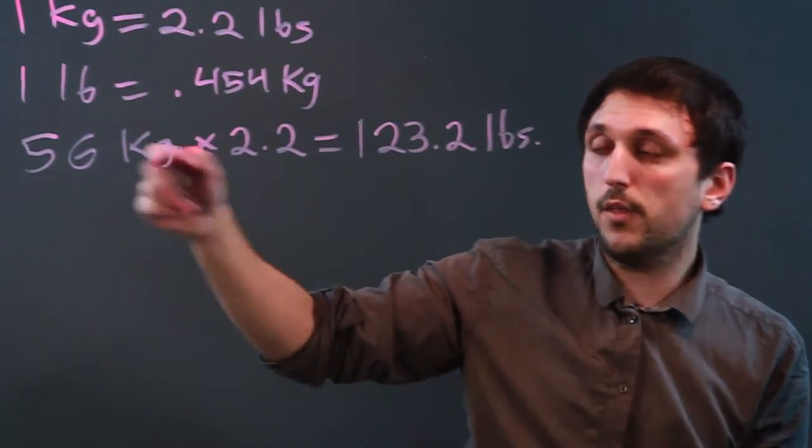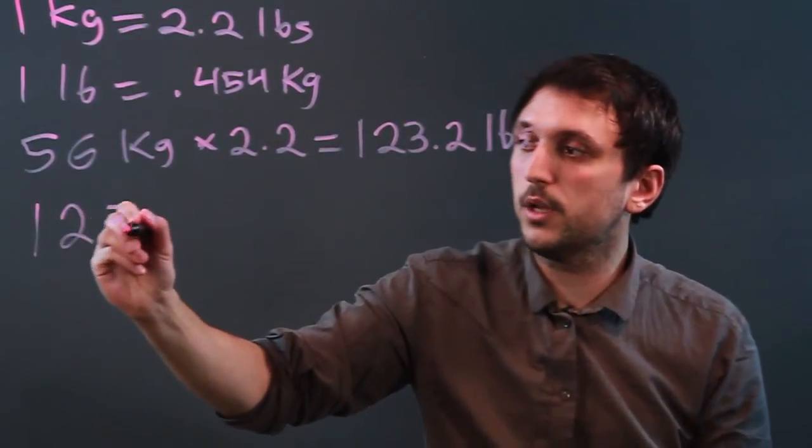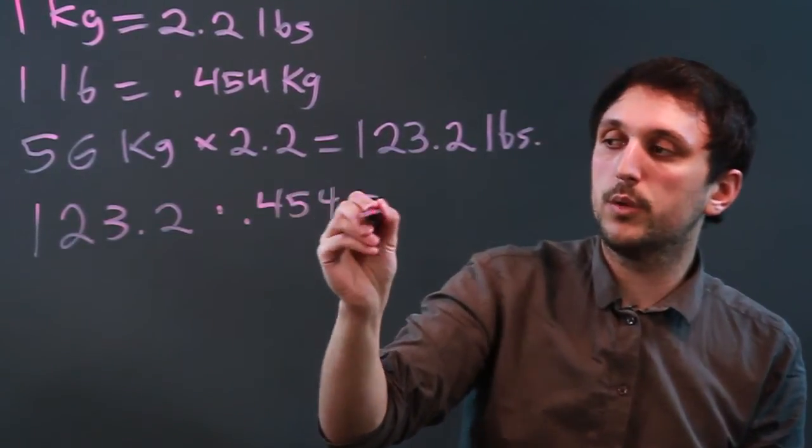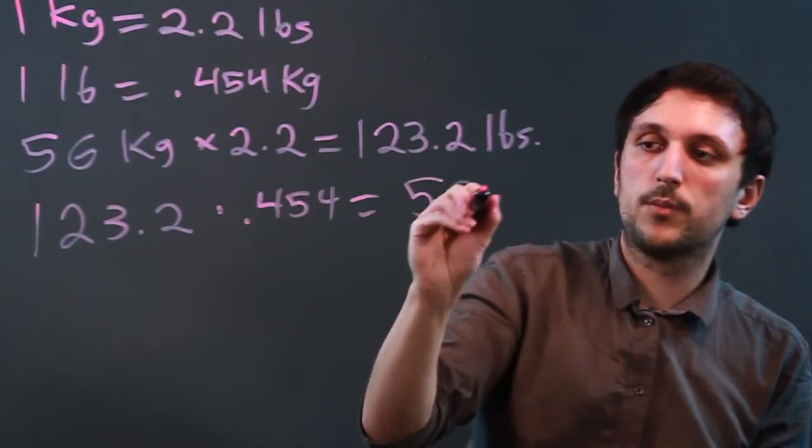Now, if we wanted to solve the other way, if we said 123.2 times 0.454, we would get 56 kilograms.